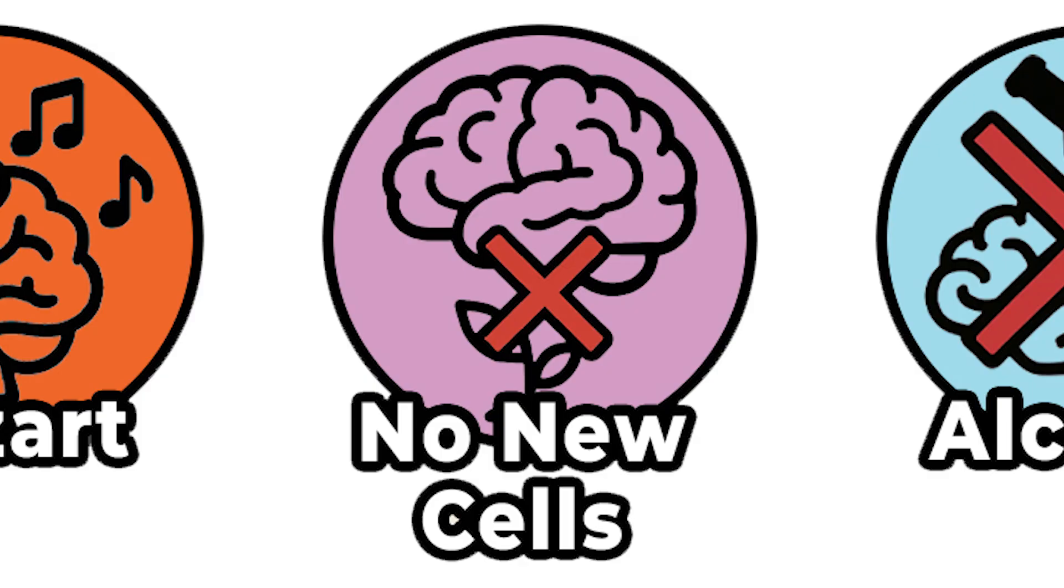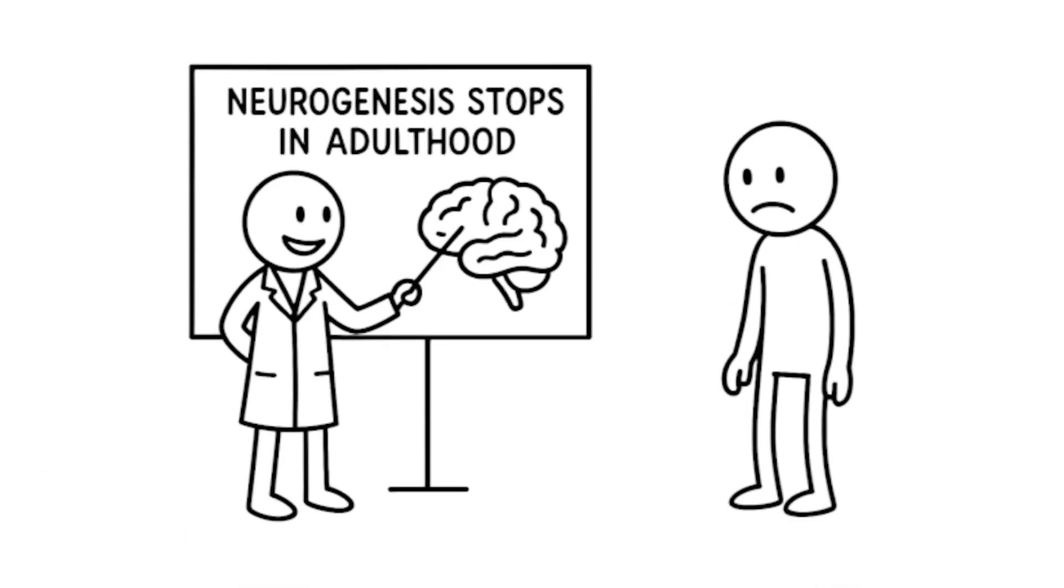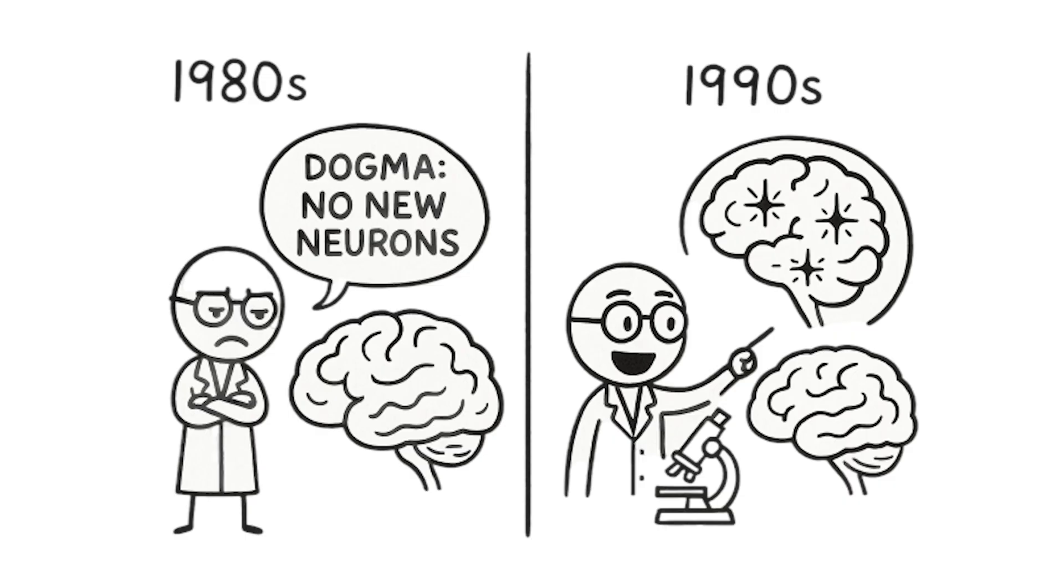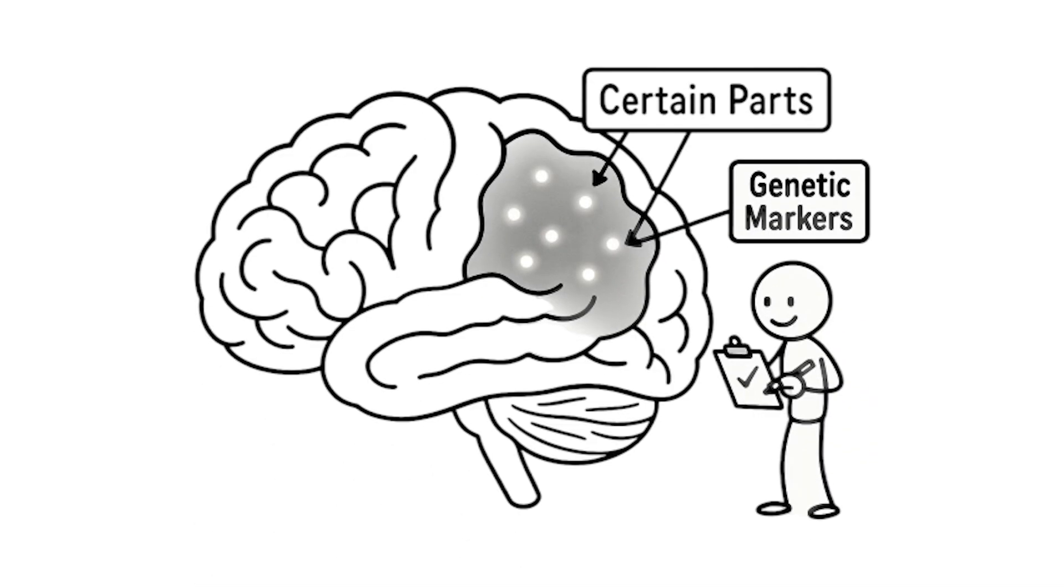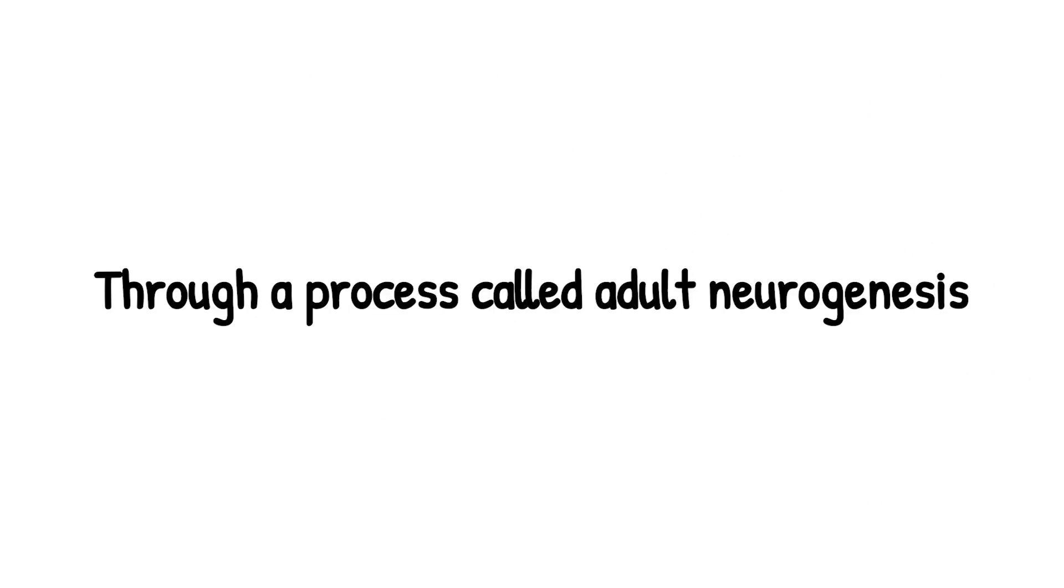After childhood, you don't make new brain cells. For decades, scientists believed neurogenesis, the birth of new neurons, stopped once you hit adulthood. Your brain was basically fixed hardware that could only lose components over time. This dogma persisted until the 1990s when researchers finally had the tools to prove it wrong. Modern research using techniques like BrdU labeling and genetic markers has confirmed that certain parts of your brain, especially the hippocampus, continue producing new neurons throughout your life through a process called adult neurogenesis.